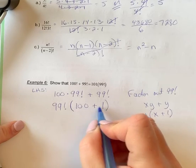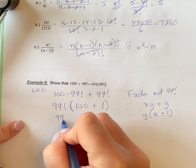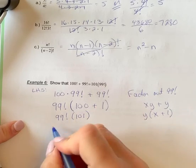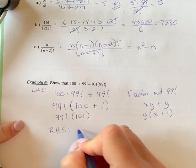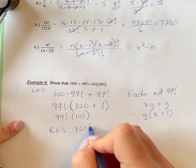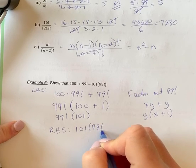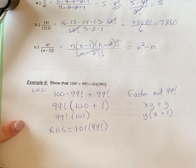Okay, so then 100 plus 1 is 101. And if you take a look at your right-hand side, we just want to rewrite this now in the correct order. So it does equal the right-hand side.